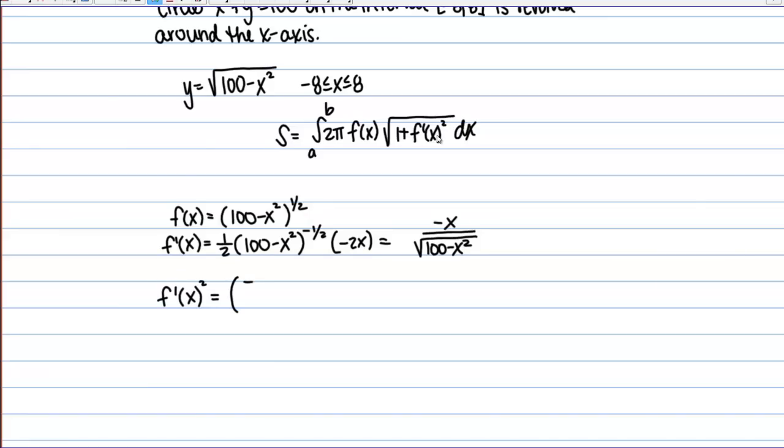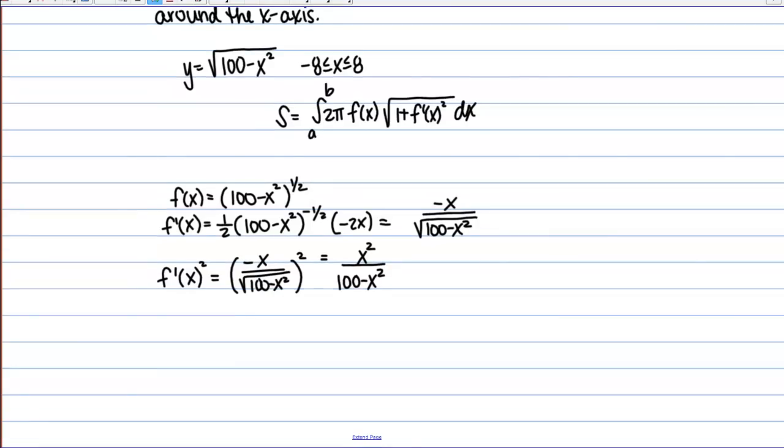So, if I square this quantity, I'm going to get an X squared on the top and a 100 minus X squared on the bottom. So, let's put this all back into our integral and see what we need to do next.